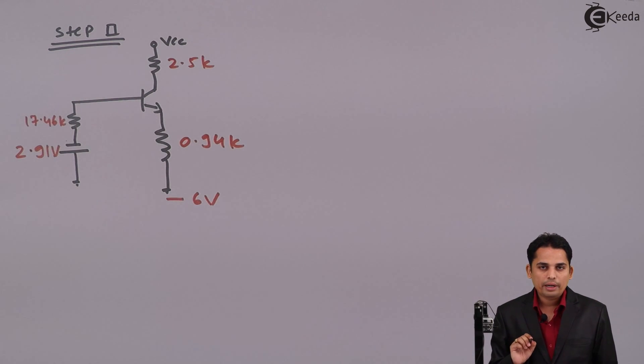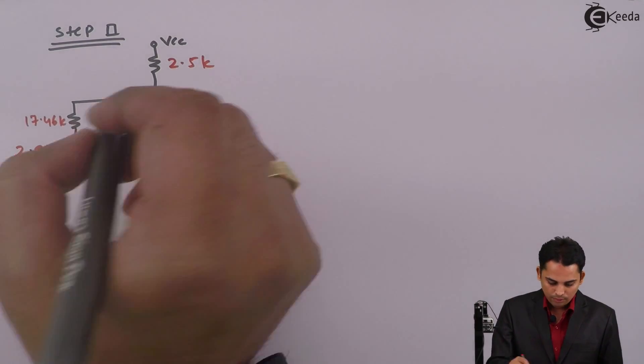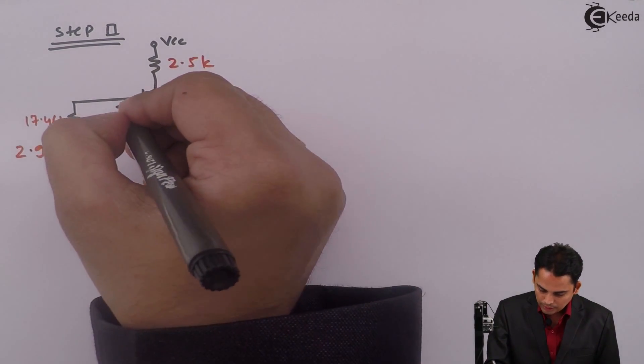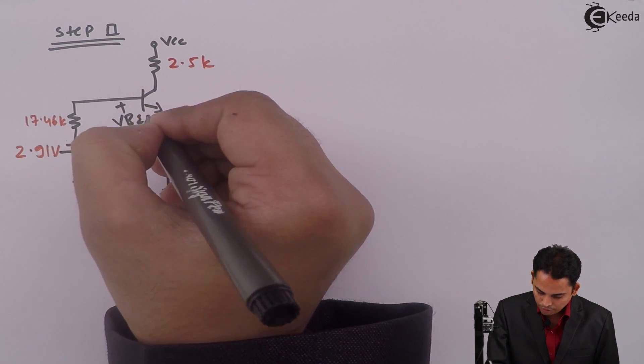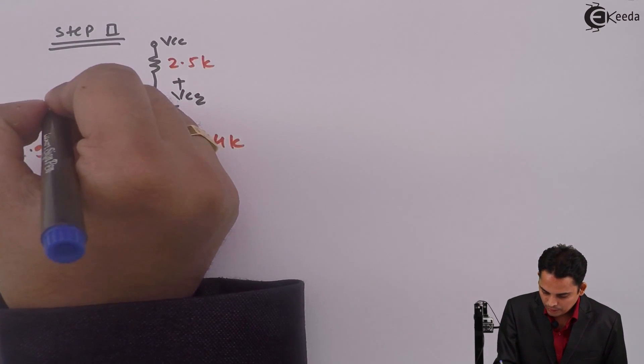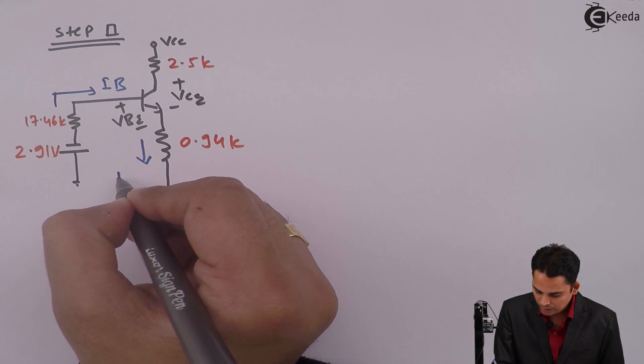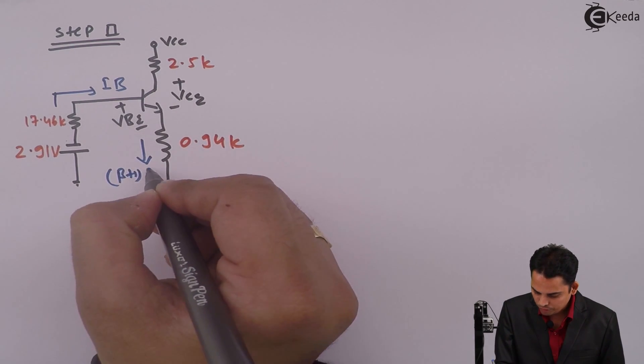Value while calculating we have got minus 2.91. The voltage source cannot be minus. So we need to change the polarity. So we have changed the polarity. Between this point there will be VB. And here there will be VC. This current will be IB. This current will be beta plus 1 times of IB.